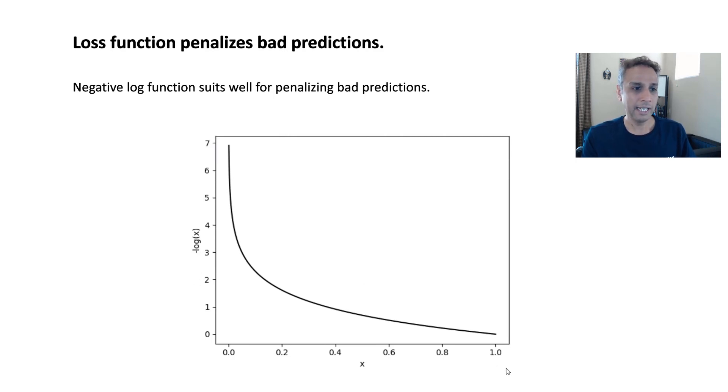A loss function penalizes bad decisions and negative log suits well for that. If you look at this negative log of x, this is just a plain math plot of log of x, negative log of x. If you just look at this, anything that is on this side where our probabilities are above 0.5, you have very good predictions. Anything above 0.5 means you have a good high enough probability. That means the loss is low. If the prediction is below like 0.4, 0.2, even approaching 0, then the loss is very high. This is an excellent loss function.